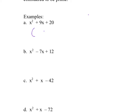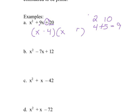For x squared plus 9x plus 20, we set up two parentheses with x at the beginning. I need factors of 20 that add to 9. Factors of 20: 2 and 10 — 2 plus 10 is 12, so that doesn't work. 4 and 5 — 4 plus 5 is 9, that's my b, so that works. So I put in the 4 and the 5.